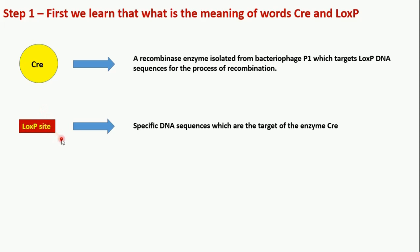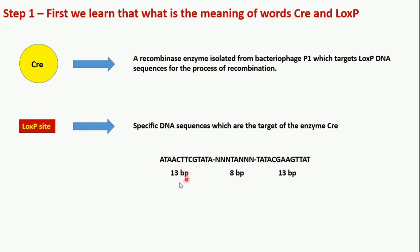This is a basic example of a Cre-loxP site where you have a 13 base pair conserved sequence, then eight base pairs, and then again a 13 base pair conserved sequence. These sequences are recognized by the enzyme Cre, and then the Cre enzyme catalyzes the process of recombination. When we only use scientific terms it gets a little bit difficult to understand the action of the enzyme and the role of the loxP site.